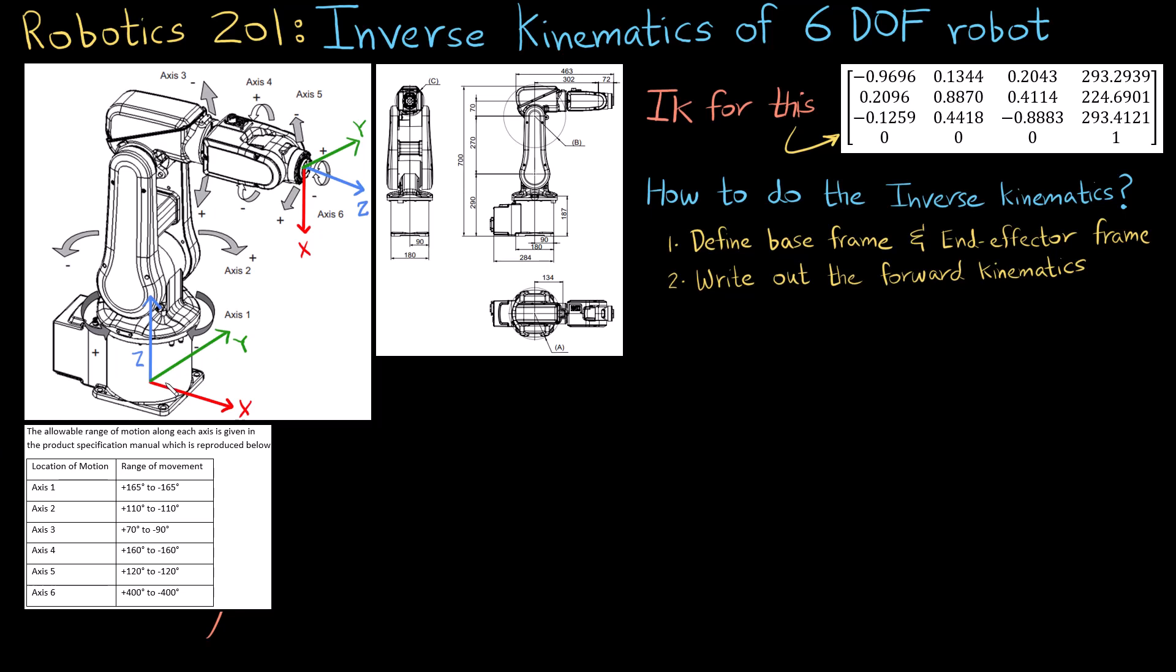So what is forward kinematics? Forward kinematics is what takes your base frame to the end effector frame. What we need to do now is we need to take this frame and move it all the way to this point, and we do it as a bunch of different homogeneous transforms.